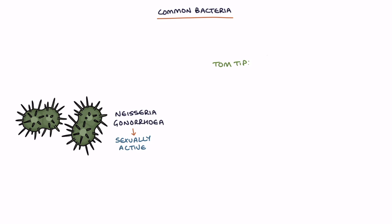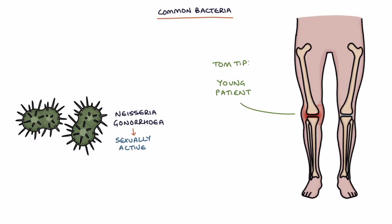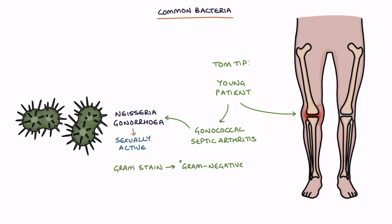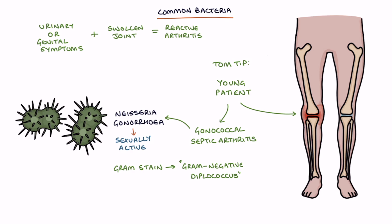A top tip for you: in a young patient presenting with a single acutely swollen joint, consider gonococcal septic arthritis until proven otherwise. The gram stain reveals a gram-negative diplococcus. Urinary or genital symptoms associated with a swollen, sore joint should make you think about reactive arthritis, but septic arthritis caused by Neisseria gonorrhea is the more urgent and dangerous differential that needs to be excluded.